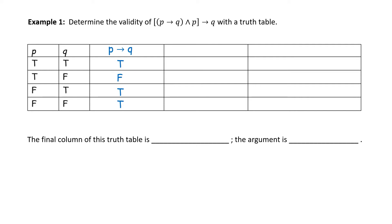Now let's put that together with ∧ P — that is, (P → Q) ∧ P. We are looking at a conjunction. With a conjunction, all simple statements have to be true. We have true and true — that would be true. However, all remaining combinations include a false: false and true is false; true and false is false; false and false is false.